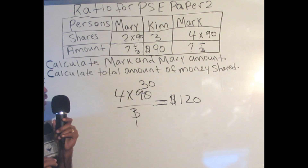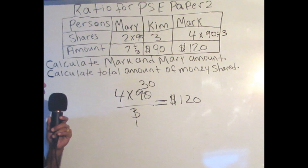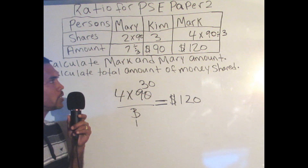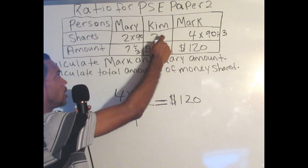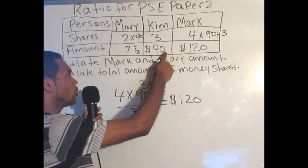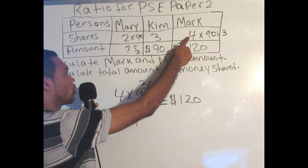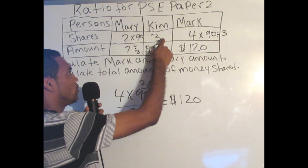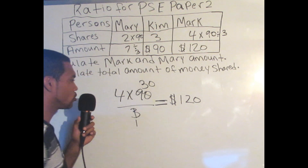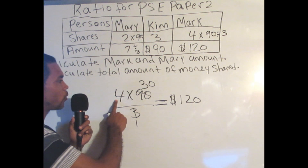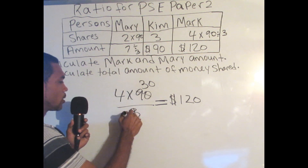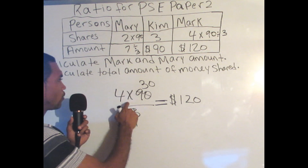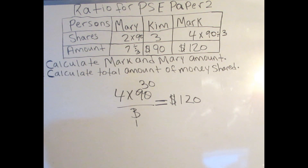The problem is solved for Mark. How do we get that $120? Mark is a ratio of 4. The problem gave us $90 that Kim received, and Kim is a ratio of 3. So we multiply Mark's ratio of 4 by 90 and divide by 3, and that gives us $120. So: Mark ratio 4 times $90 divided by 3 — 3 into 3 is 1, 3 into 90 is 30, and 4 times 30 is $120. So we know that Mark received $120.